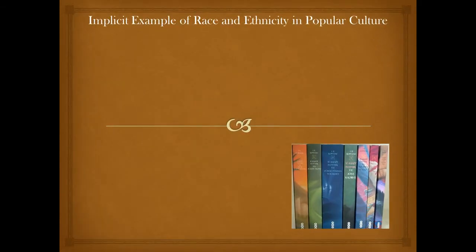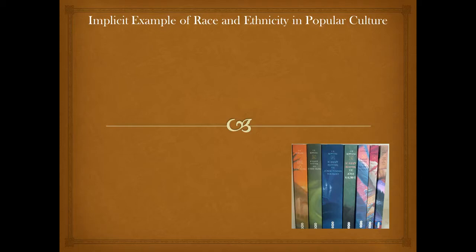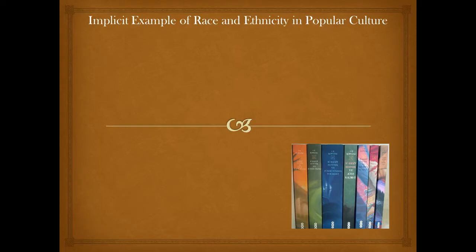Now let's look at implicit examples — ones that are not as obvious but are still having that discussion. Harry Potter has such rich content for popular cultural studies. One area is race: the whole discussion of muggles and wizards, the people that can do magic and the people that can't, becomes a major piece throughout the stories. What Voldemort — the one whose name should not be spoken — is most concerned with is pure blood, preserving pure blood and not having mixed blood or muggles involved in wizardly things. When you hear 'pure blood,' you're dealing with race, because that ties directly into the history of trying to make a race pure.